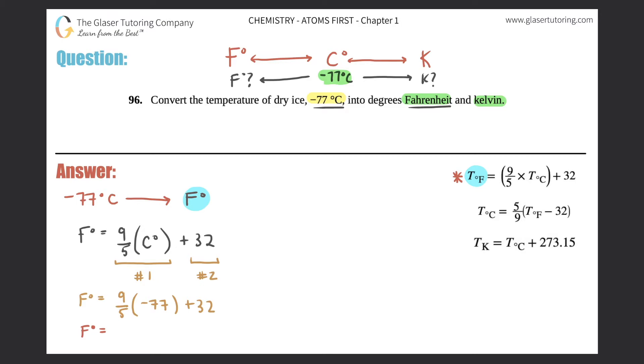Or actually in this case it's 9 divided by 5 times negative 77. So 9 divided by 5 times negative 77 is negative 138.6. However, we need to have the correct number of sig figs. There are two sig figs here, right? So my answer should only have two sig figs.